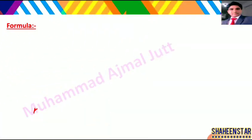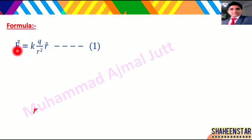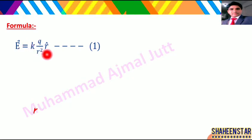To solve karte hain — electric field intensity ka formula hamare paas hai: E = kq / r² × r̂ (unit vector). Student, yeh hamare paas electric field intensity hai, kyunki hamare paas position bhi given hai aur direction bhi given hai. Electric field ek vector quantity hai, aur r̂ unit vector hai.